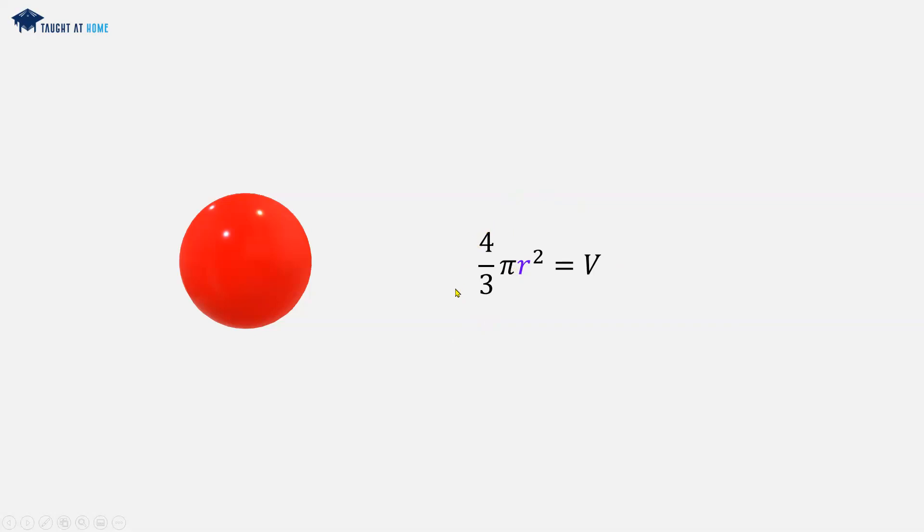We've got 4 over 3 pi r squared is equal to v. So first of all, we can remove the 4 over 3 fraction from the left hand side. We can do this by multiplying both sides by the reciprocal of this fraction. So the reciprocal of this fraction is 3 over 4. Because now when we cross multiply, these cancel out. And so we're left with pi r squared is equal to 3 over 4 v, or 3 v over 4. And we've just put the v into the numerator.